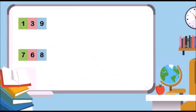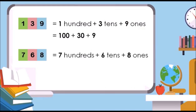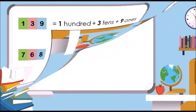Look at these three-digit numbers. We have 139 and 768. One hundred and thirty-nine is equal to one hundred plus thirty plus nine. Seven hundred and sixty-eight is equal to seven hundred plus sixty plus eight. Look at the place value chart.